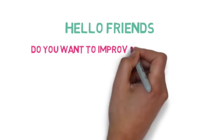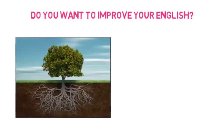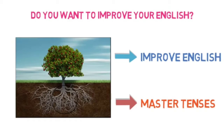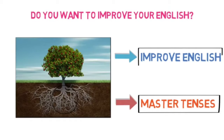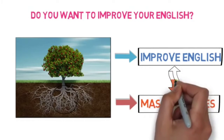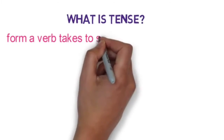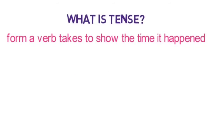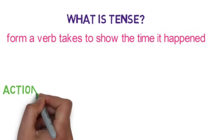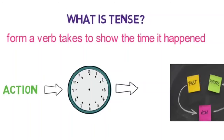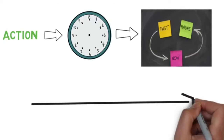Hello, children. Do you want to improve your English? We all know that we need good roots to get good fruits. To get good fruits of English, we are now going to learn the root of English — that is, we are going to learn tenses today. These are the main fundamental pillar for both speaking and writing correct English. You must learn them properly. Tense is a form of a verb that shows the time an action happened. It describes when any action happened with respect to its time. The time of the action could be in the past, present, or future.